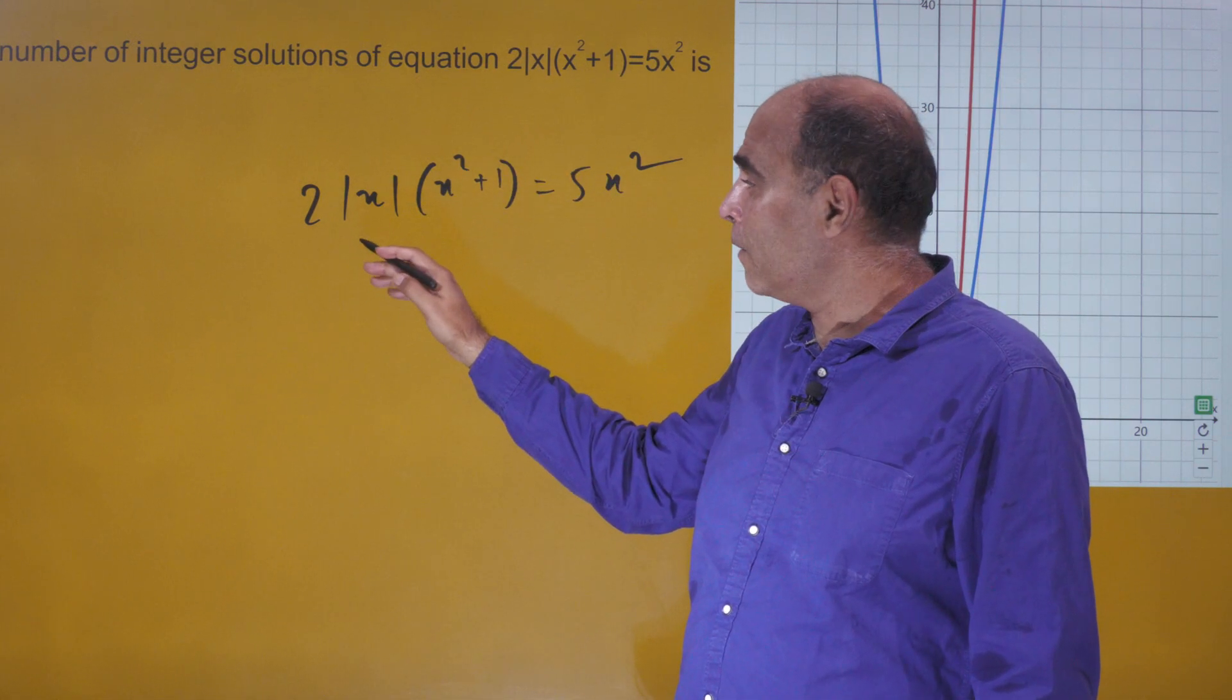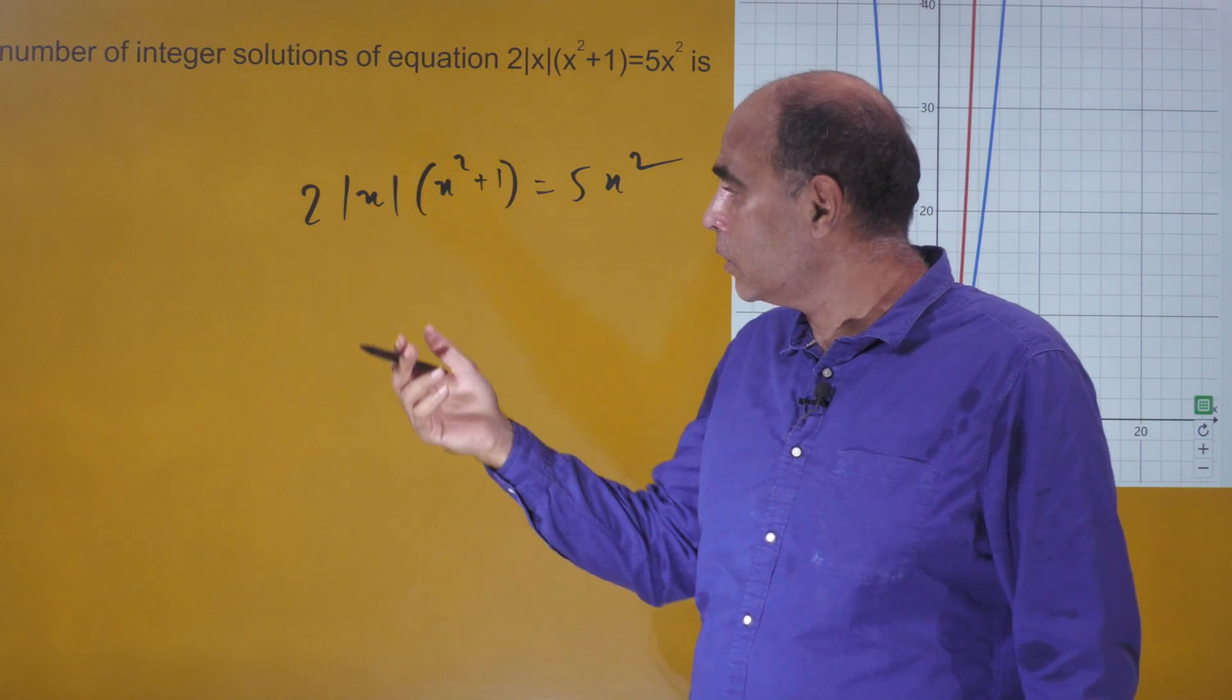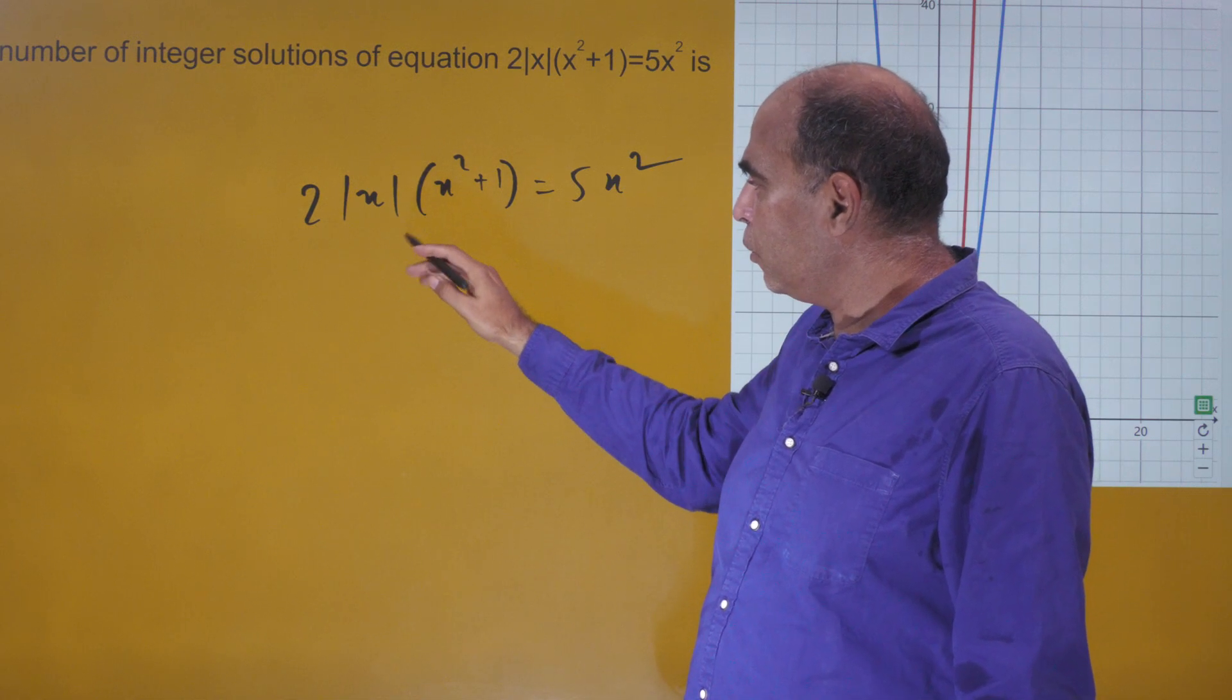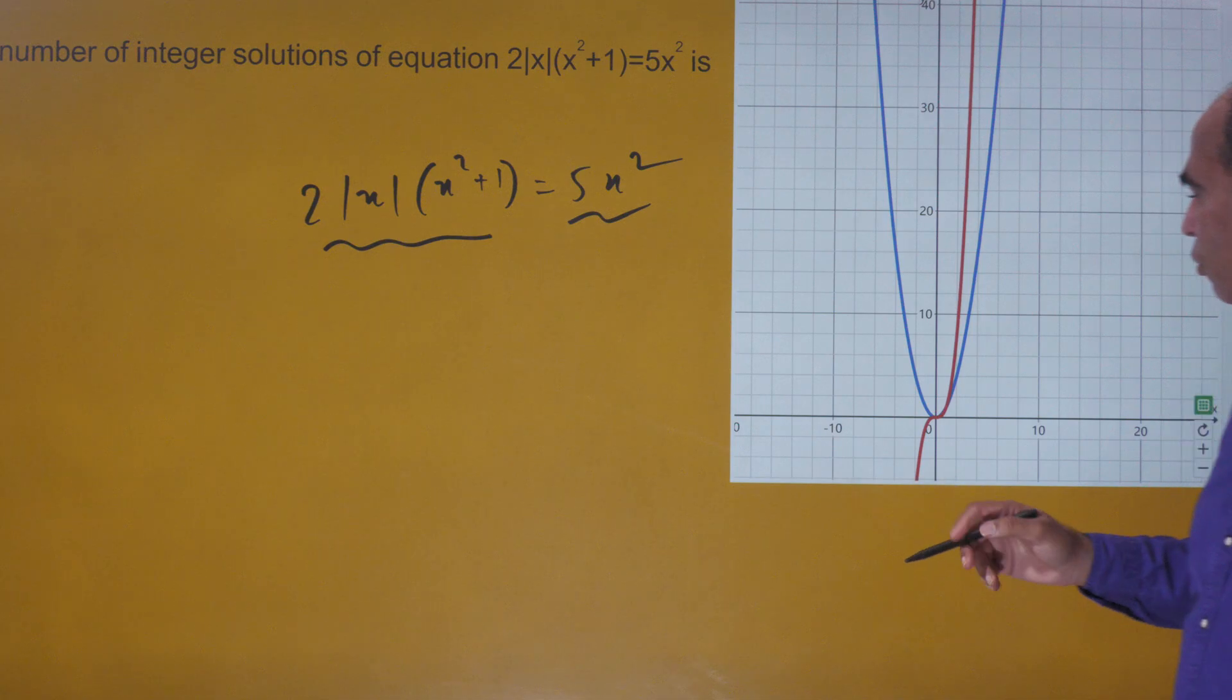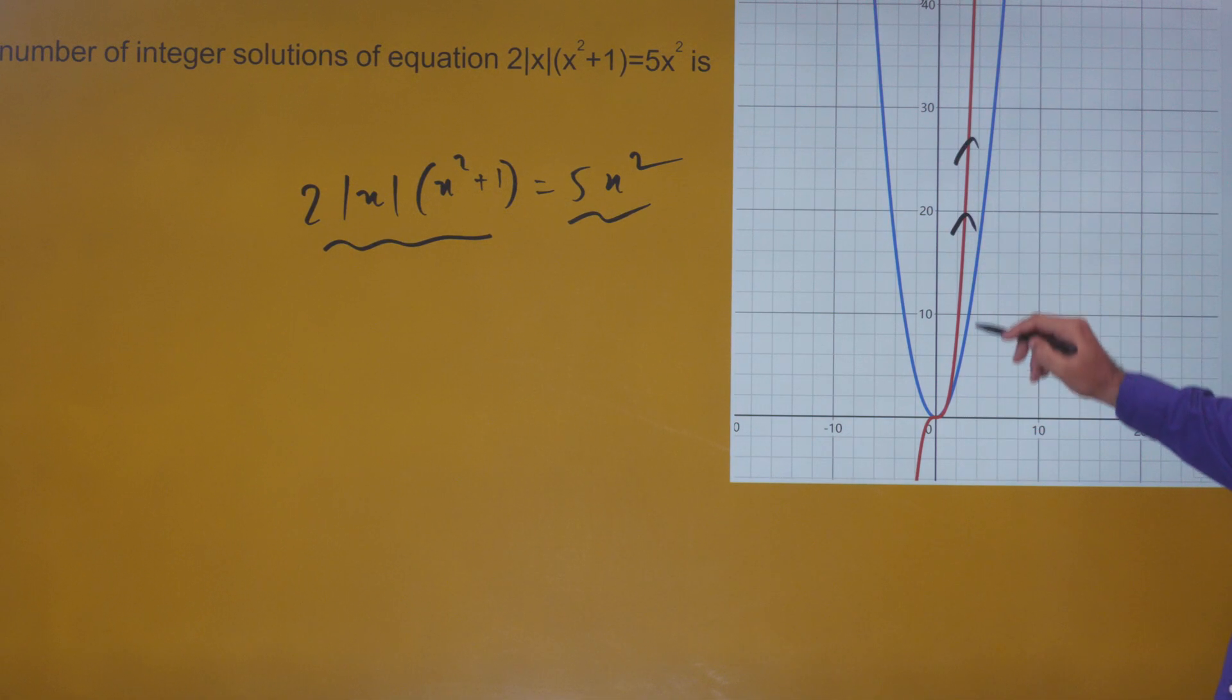The other thing you notice is this is a cubic function, this is a quadratic function. In general, you should know that cubic functions always move faster than quadratic functions on the y-axis as you increase the value of x.